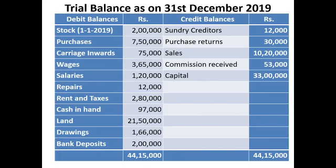Purchases appear on the debit side of the trading account. Carriage inward is also part of the trading account. Wages also go to the trading account. Salaries and repairs go to the profit and loss account debit side. Rent and taxes are both expenses appearing in the debit side. Cash in hand and land are considered as assets. Drawings — the amount taken for personal use — is deducted from capital on the liability side.